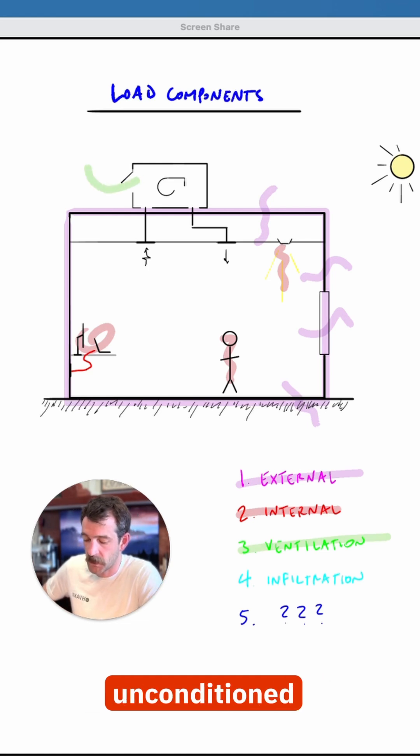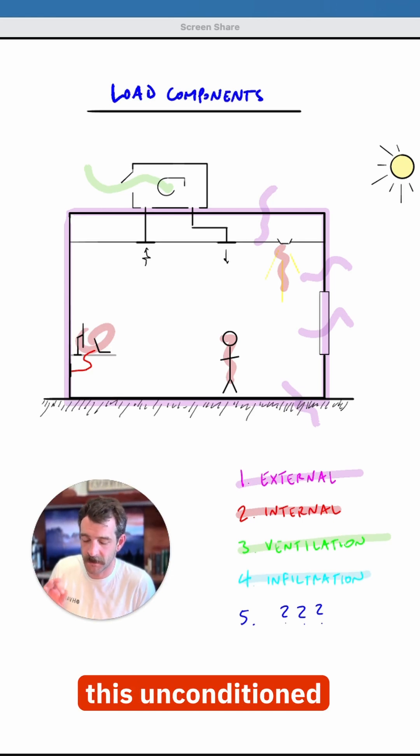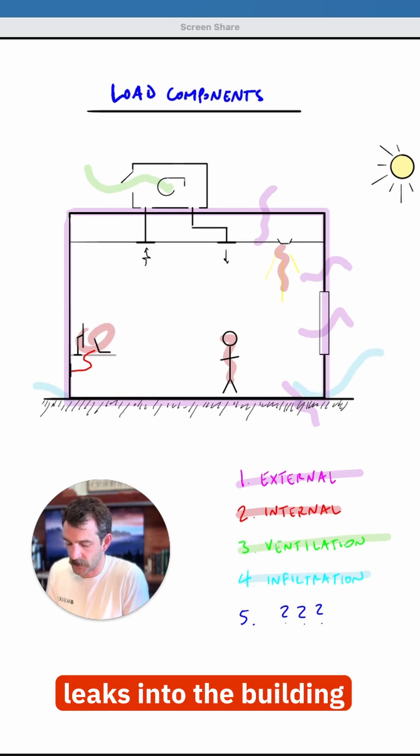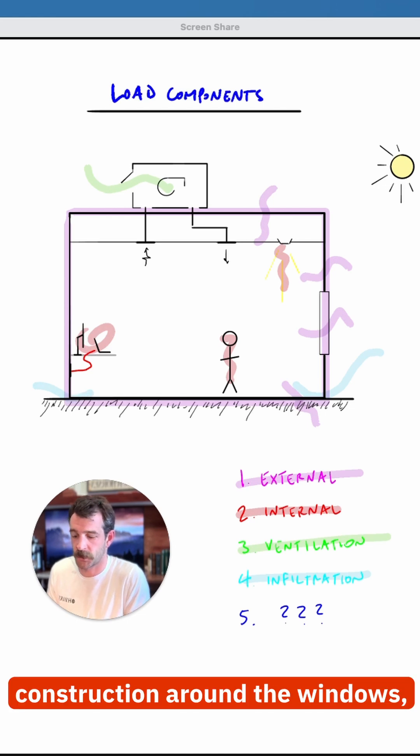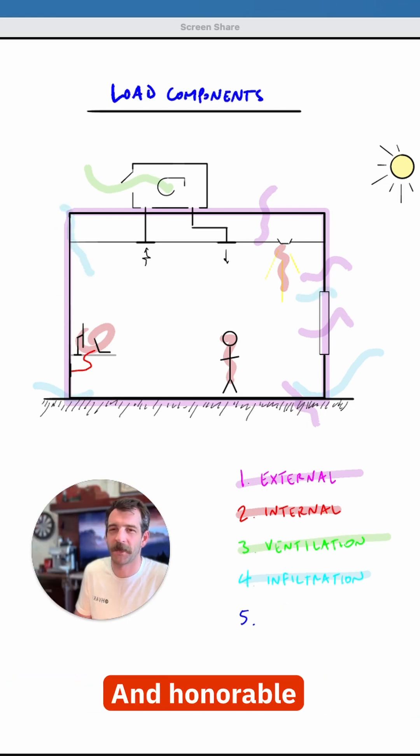Number three, ventilation. This is any heat added due to the introduction of unconditioned outside air into the system. This is done intentionally because people need fresh air. Number four, infiltration, is almost the same thing except this unconditioned outside air is not intentional. It's air that leaks into the building through cracks in the construction, around the windows, doors, anywhere that this air can leak in.